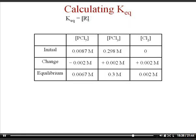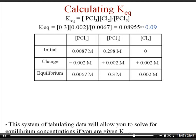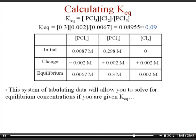With all equilibrium values known, we plug products divided by reactants into the equilibrium expression and end up getting a K value of around 0.09. And again, there are no units.